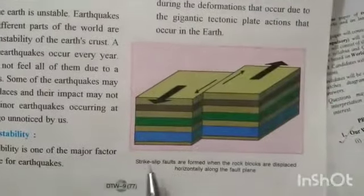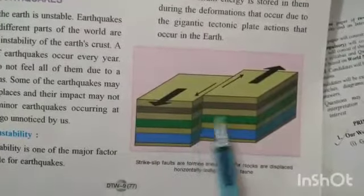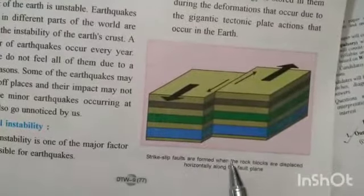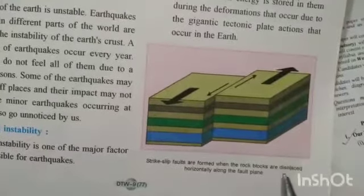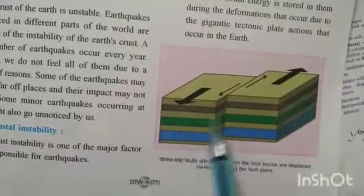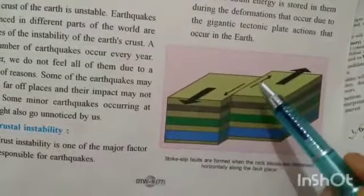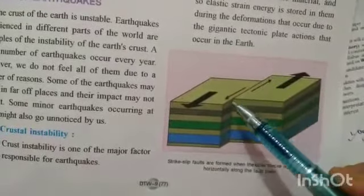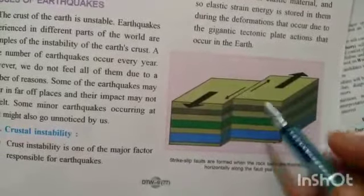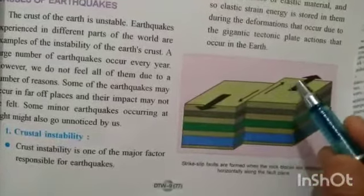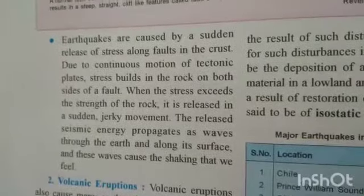Strike-slip faults are formed when rock blocks are displaced horizontally along the fault line or fault plane. This is the horizontal displacement of the earth's rocks or surface. Earthquakes are caused by a sudden release of stress or energy along the fault in the crust due to continuous motion of tectonic plates.